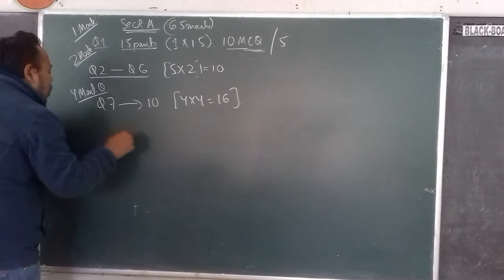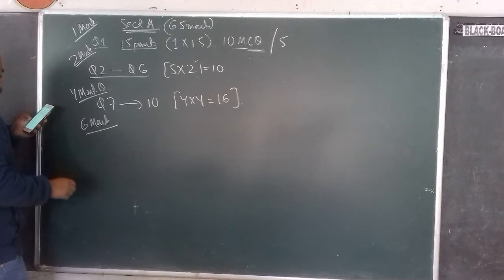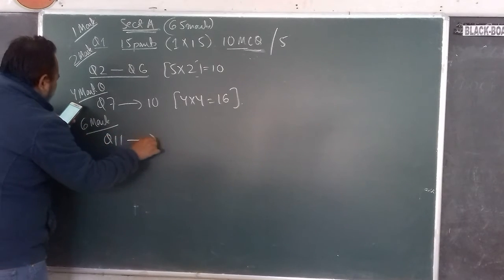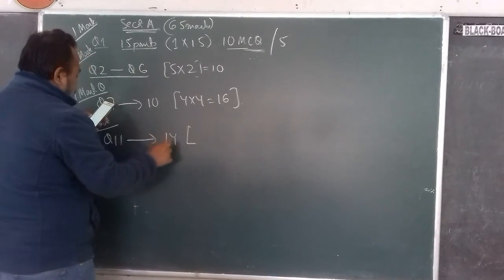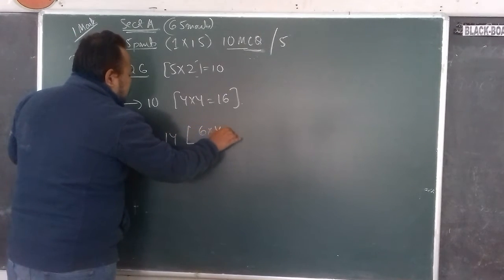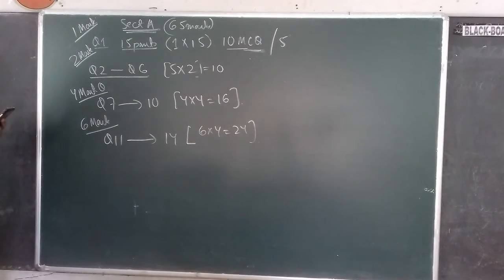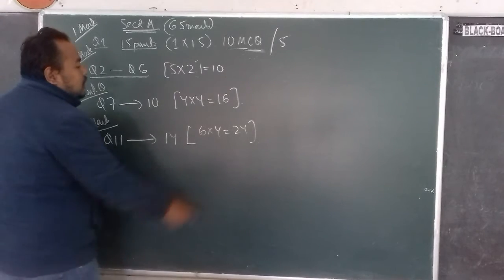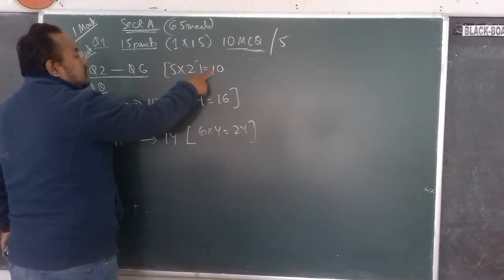Finally, the long answer type questions will be of 6 marks, from question number 11 to question number 14 — four questions, so 6 × 4 = 24 marks. Question numbers 11 and 12 will have internal choices. So 24 plus 16 gives you 40, plus 10 is 50, plus 15 is 65.